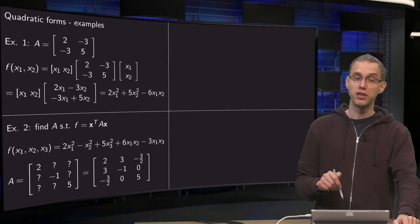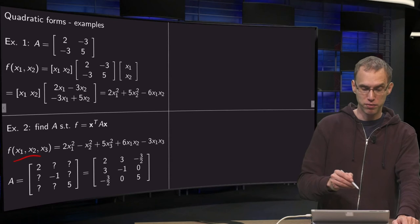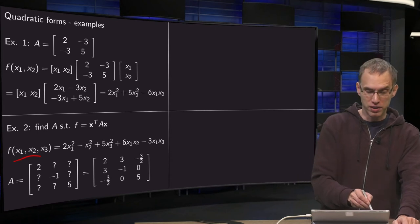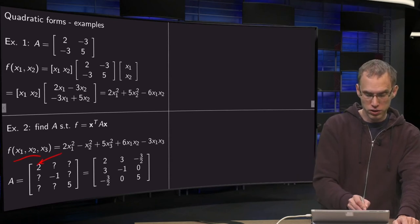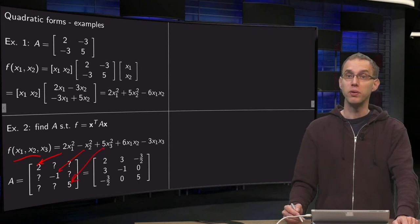Now let's try to do this vice versa. We have some f and now we want to find the quadratic form. We have the diagonal elements, the 2x1 squared, the minus 1x2 squared and the 5x3 squared. So we do those first.